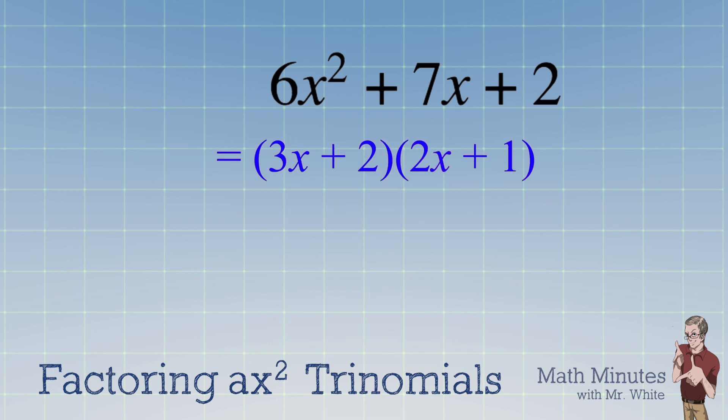Holy cow, we're done. Seriously, that's all there is to this. We just split 6x squared plus 7x plus 2 into 3x plus 2 times 2x plus 1, and we did it with absolutely no guessing, no checking. We just followed a simple process. It's kind of cool.